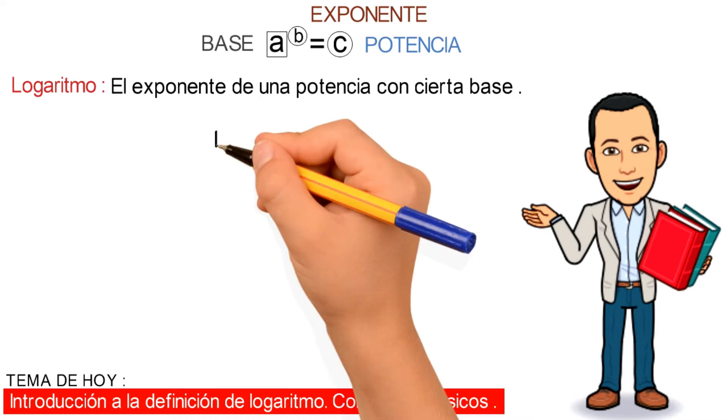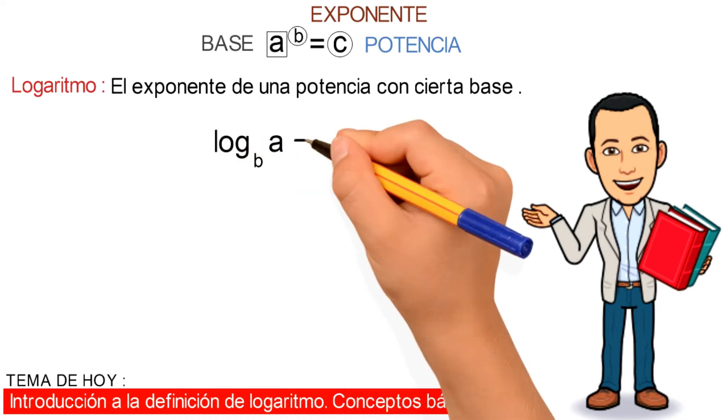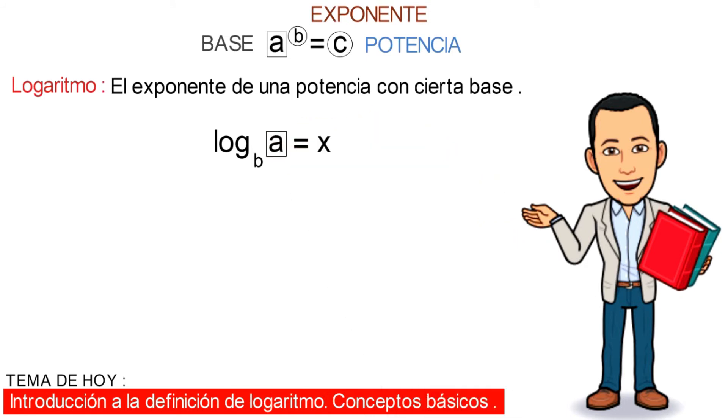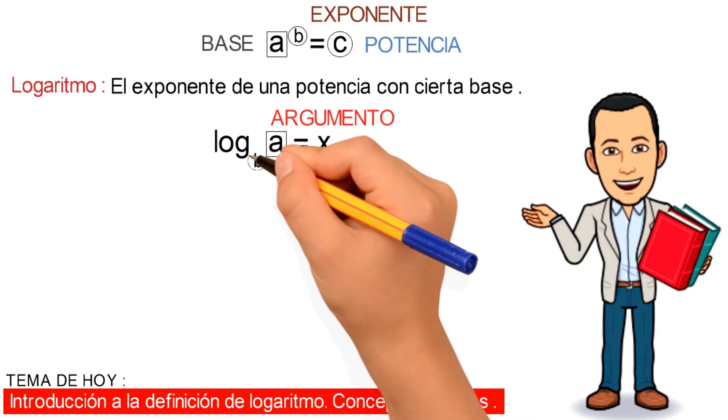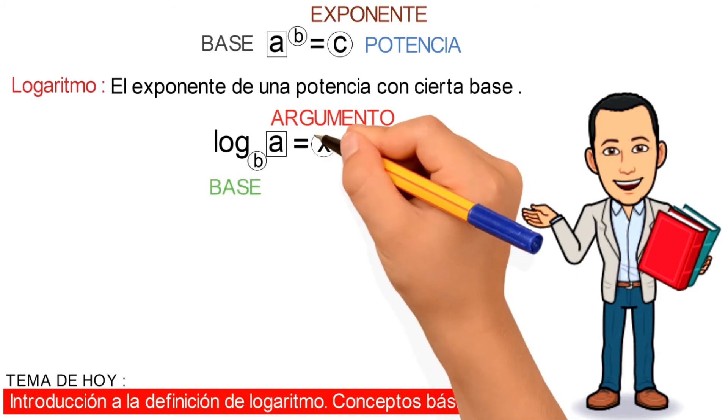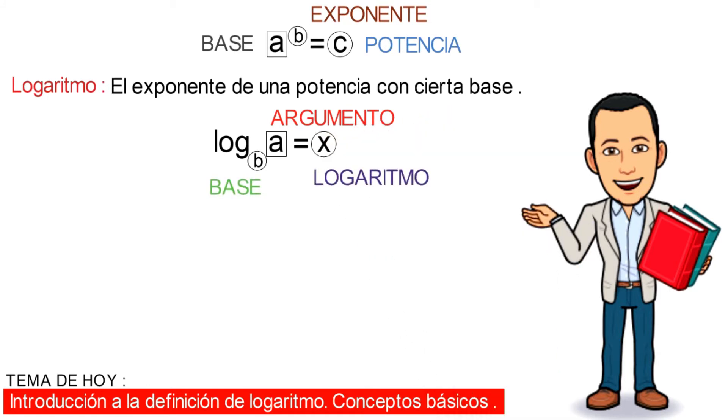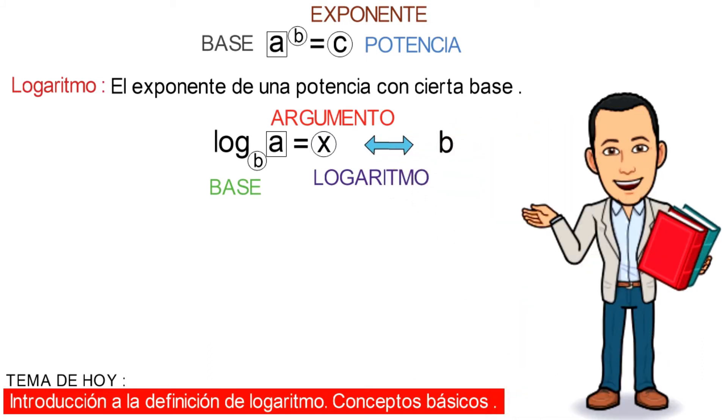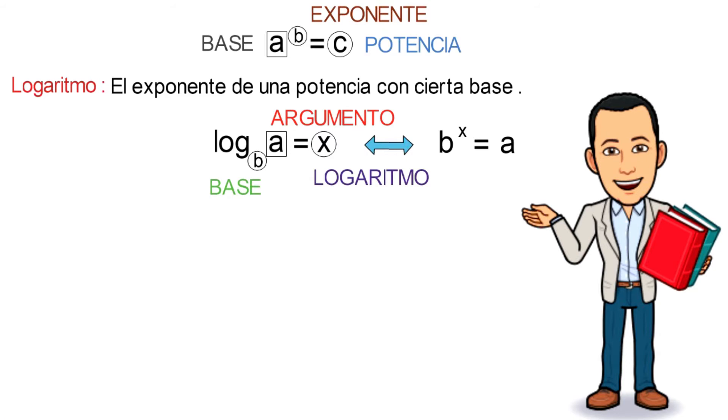Identificado por la expresión donde A es un número real mayor que 0 es el argumento, donde B es un número real mayor que 0 y distinto de 1 es la base, y X es el valor del logaritmo. Esta expresión es equivalente a la ecuación exponencial B elevado a la X es igual al elemento A, y esta expresión es la que vamos a utilizar para calcular el valor del logaritmo.